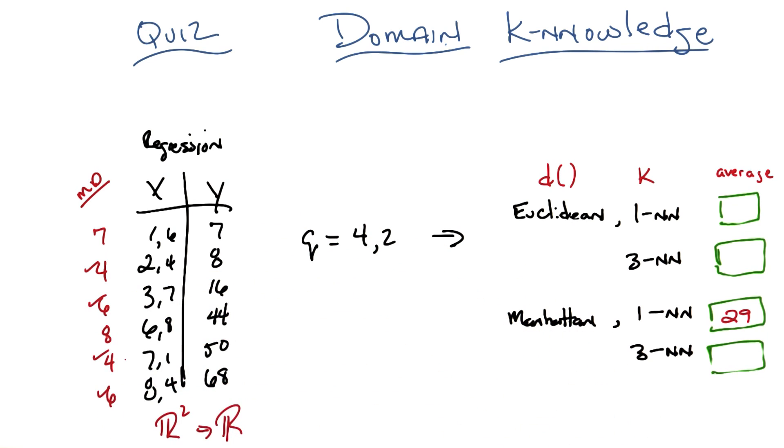And then we have the average of those things, which is what? 8 and 50, and 16 and 68, which gets us 35.5. Obviously. Okay. All right. So that was pretty straightforward. And those answers aren't too far off from one another. So what about the Euclidean case?